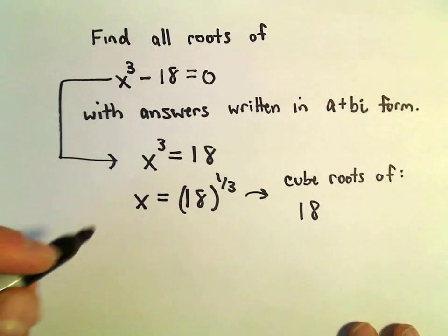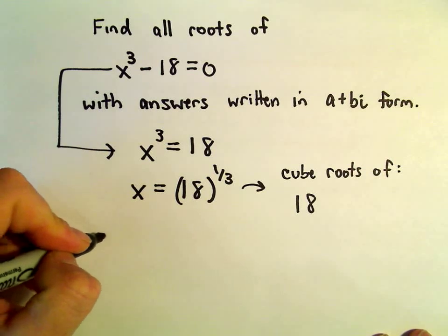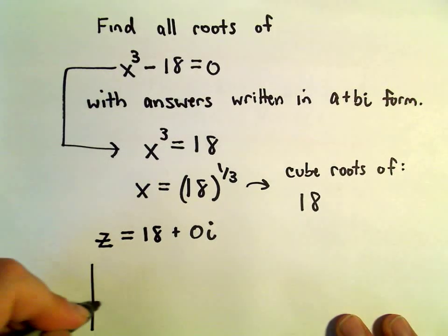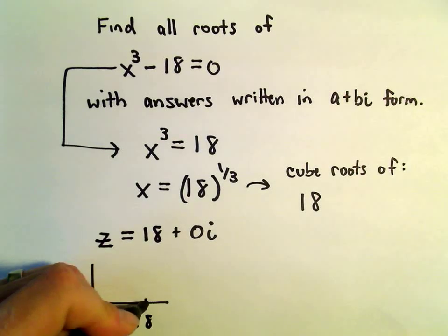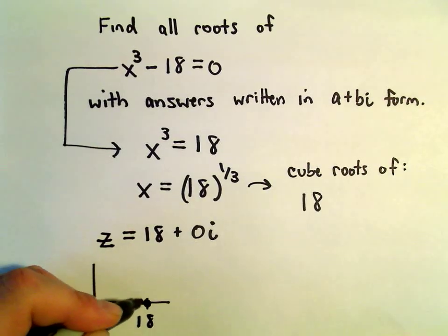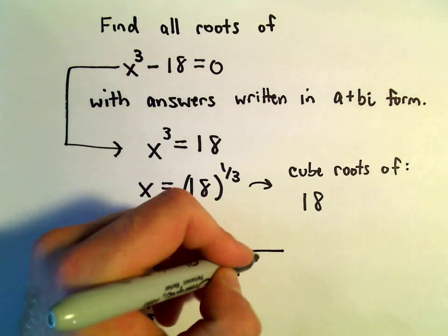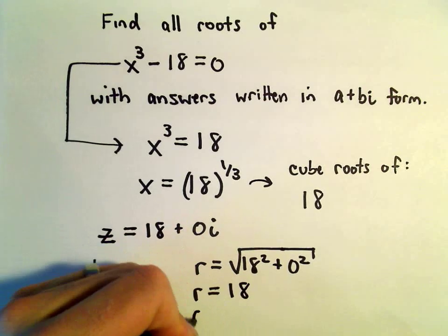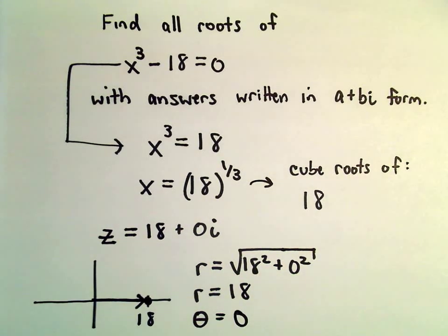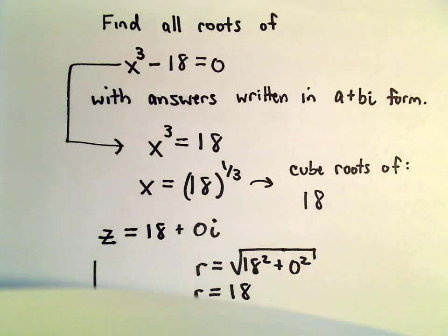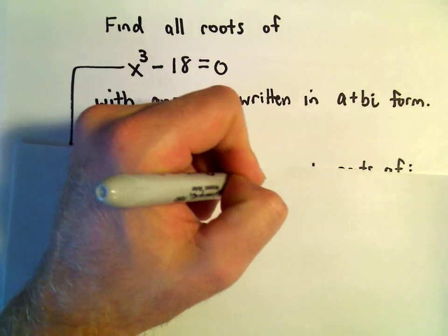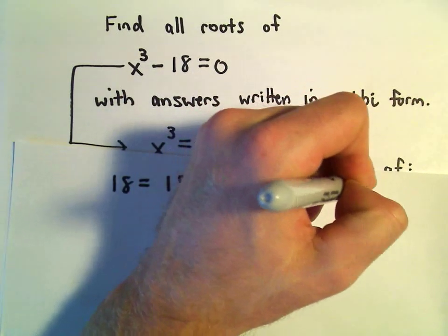We'll have to write 18 in polar form. We can write 18 as 18 plus 0i as a complex number. So we go over 18 but don't go anywhere on the imaginary axis. Our r value would be the square root of 18 squared plus 0 squared, which is just 18. Our angle theta would be 0. So we can write 18 as 18 times cosine of 0 degrees plus i sine of 0 degrees.